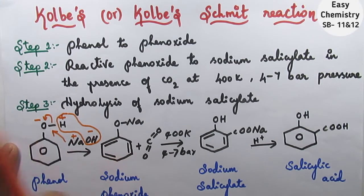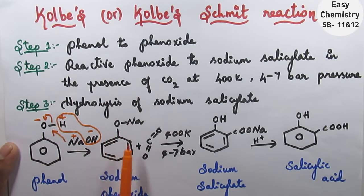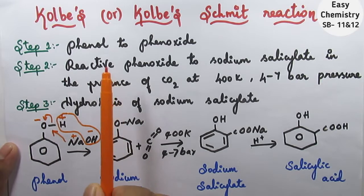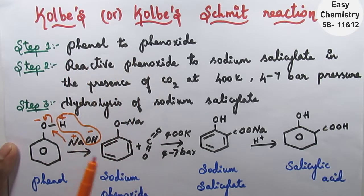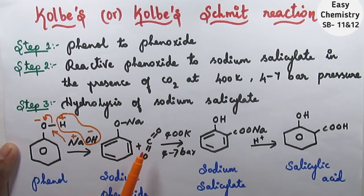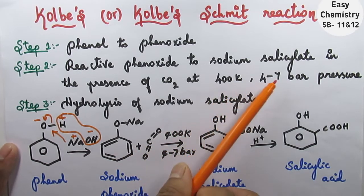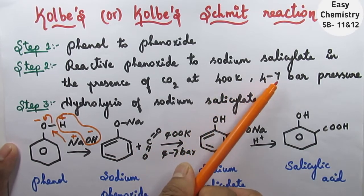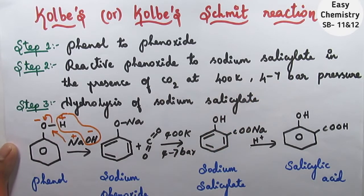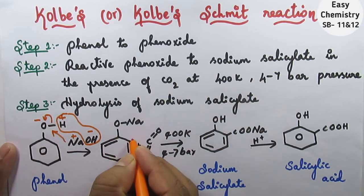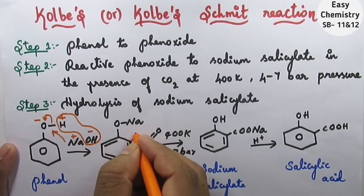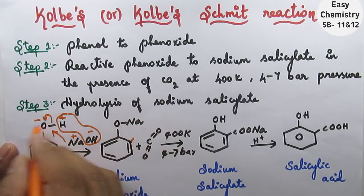Step 2: sodium phenoxide is very reactive. It reacts with carbon dioxide at a temperature of 400 Kelvin and 427 bar pressure. The reaction proceeds at the ortho position due to the ortho-para directing nature of the phenoxide group.